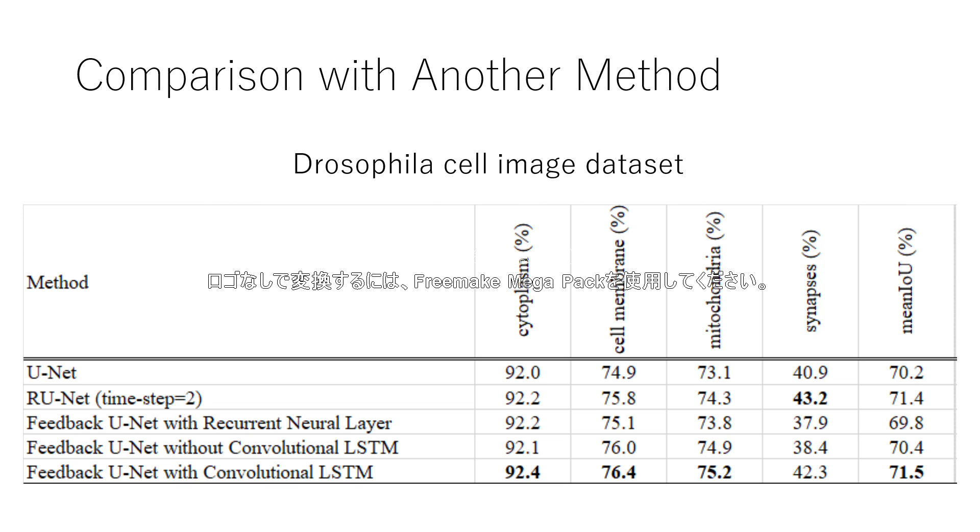For other methods, there is no significant improvement in accuracy over the baseline. Especially, we found that the accuracy of synapse with small area is reduced. We consider that high-level features are obtained regardless of the presence or absence of convolutional LSTM by forming feedback processing for three classes with large area such as cytoplasm, cell membrane, and mitochondria. However, for synapse classes with small area, high-level features are lost without convolutional LSTM and IoU decreased.